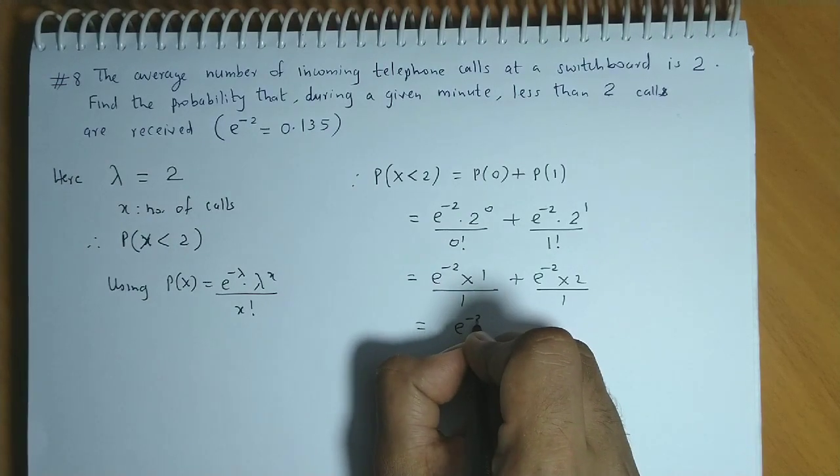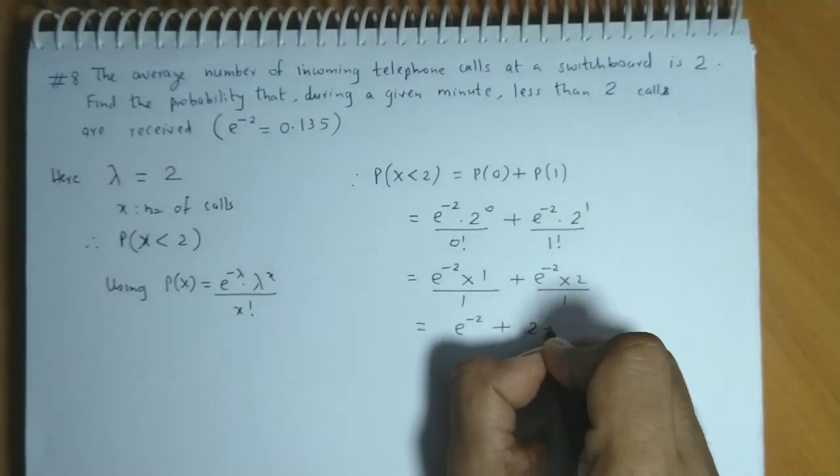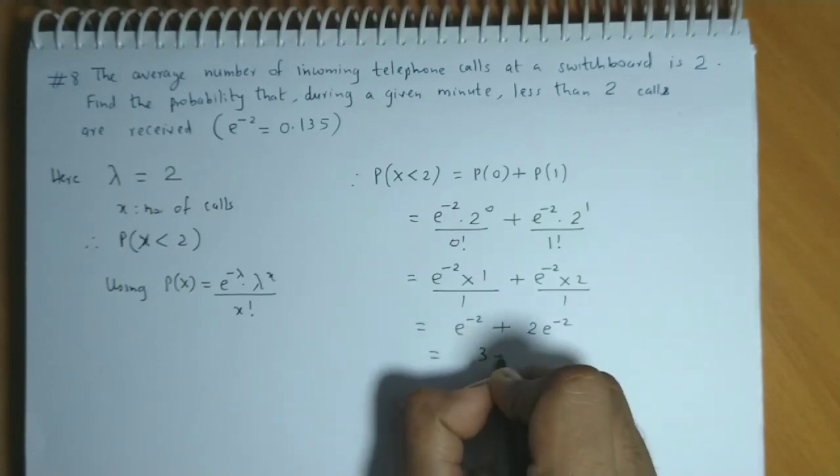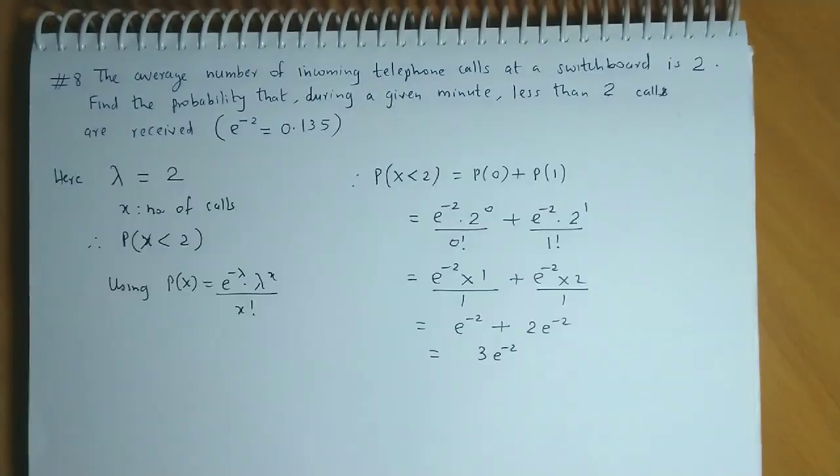This will be e raised to minus 2 into 2 and below will be 1. So finally we have e raised to minus 2 plus 2 times e raised to minus 2. So the total becomes 3 times e raised to minus 2.